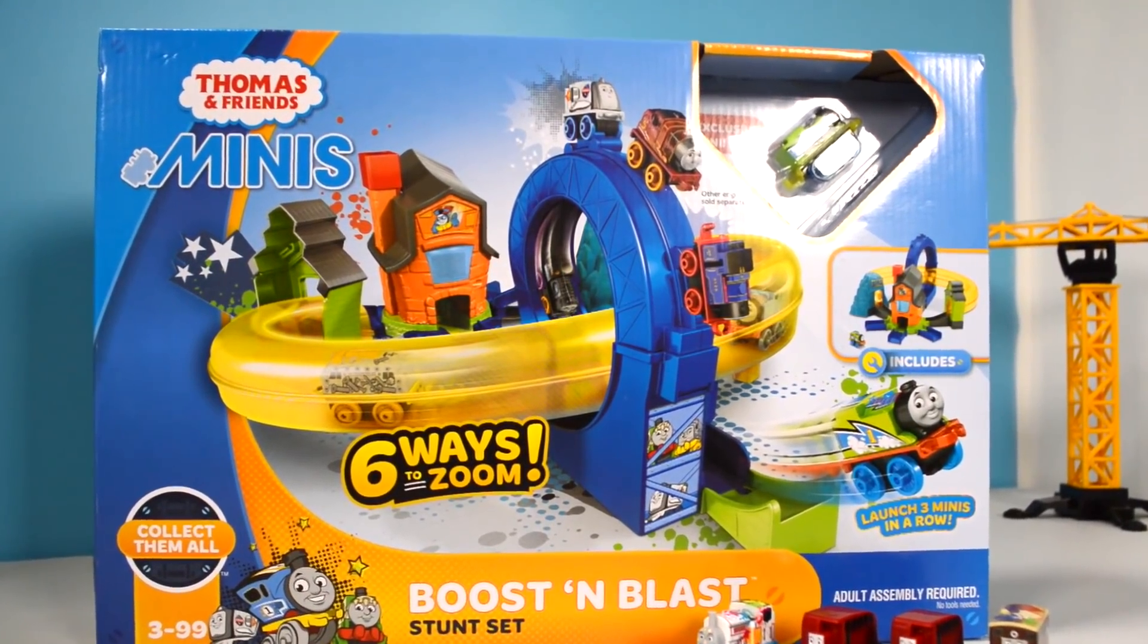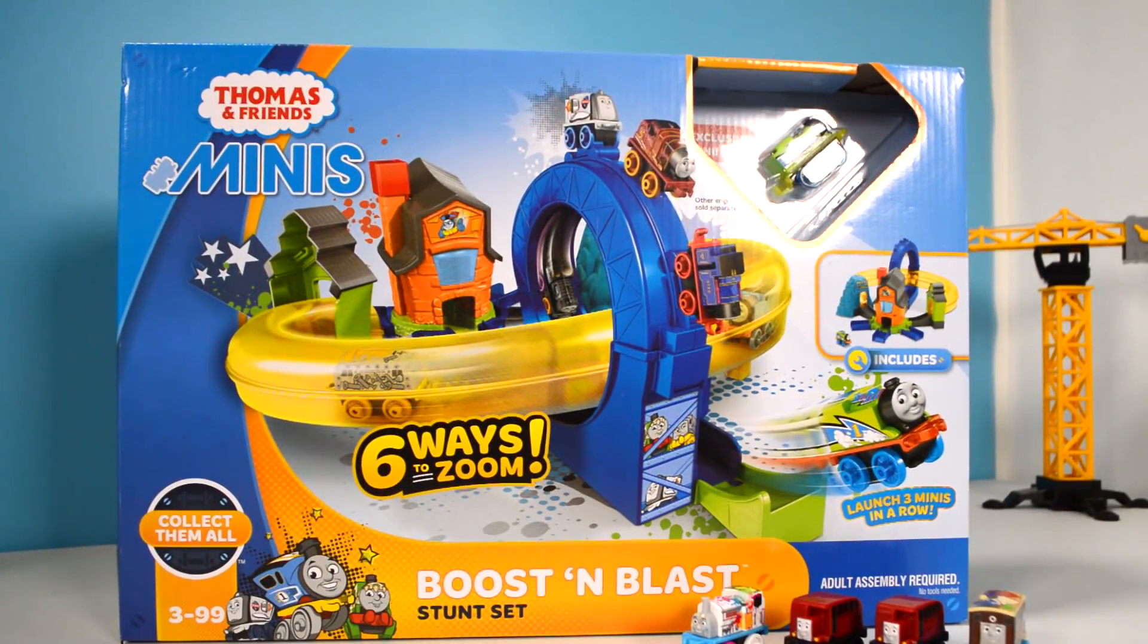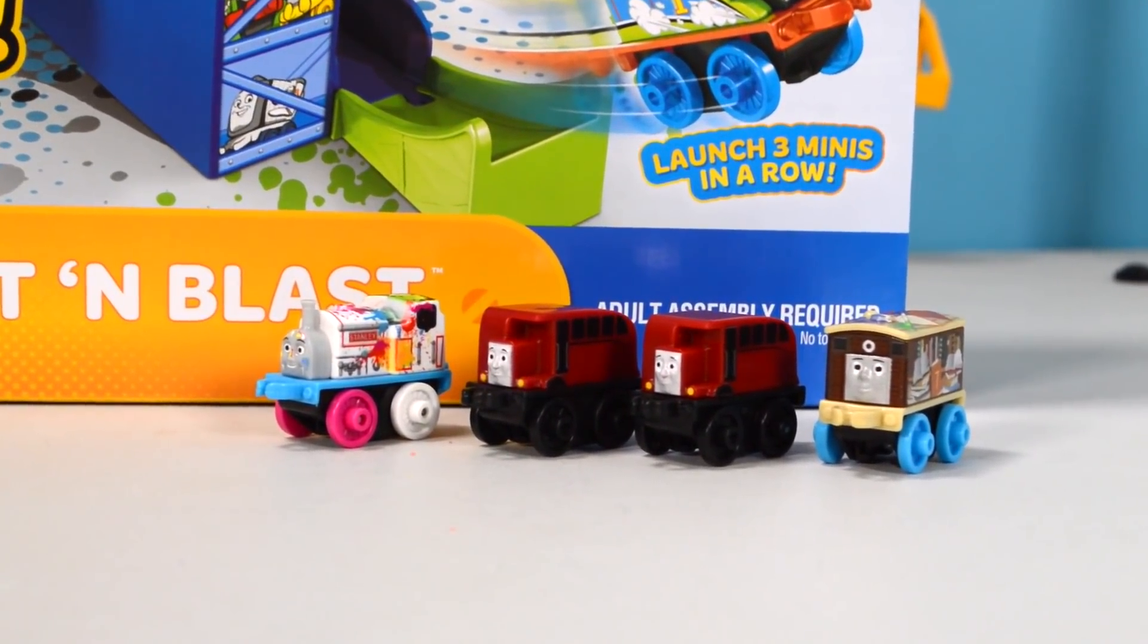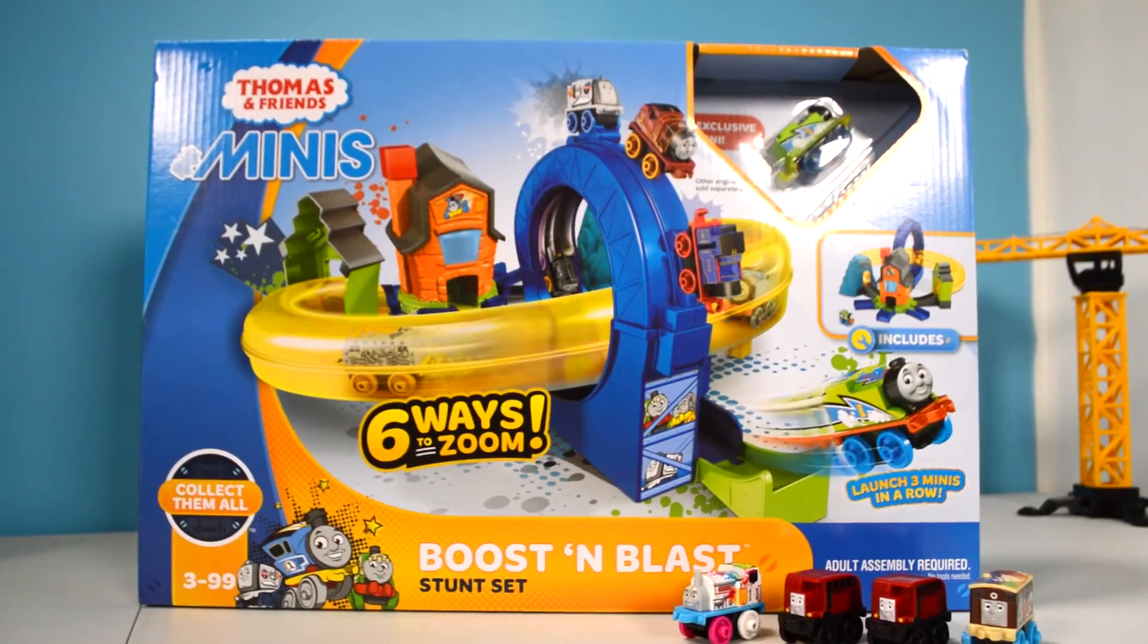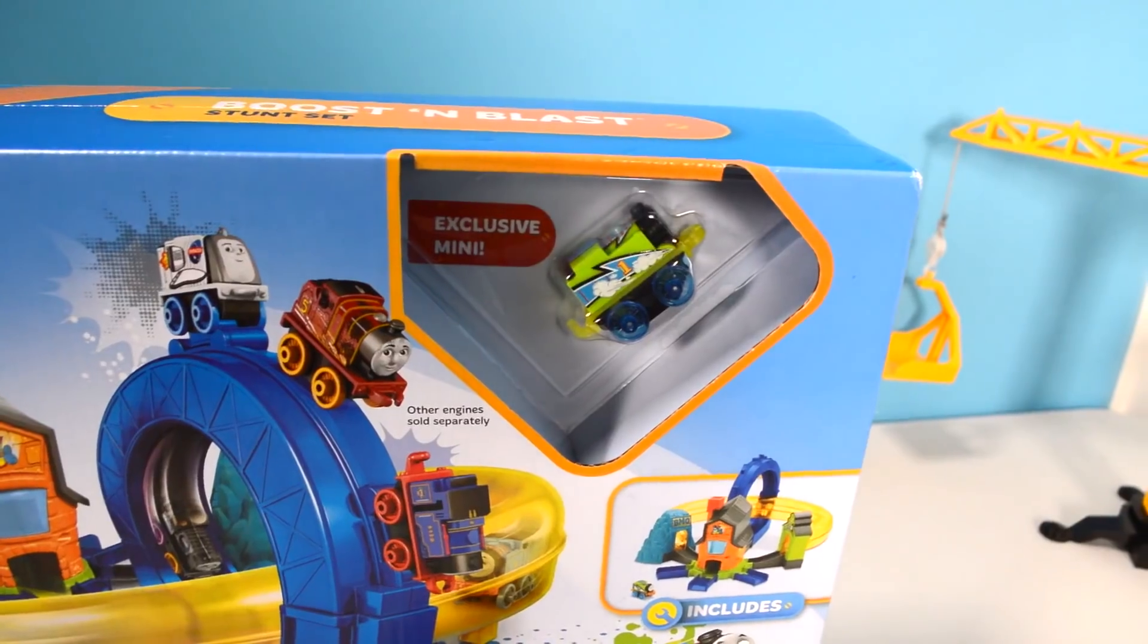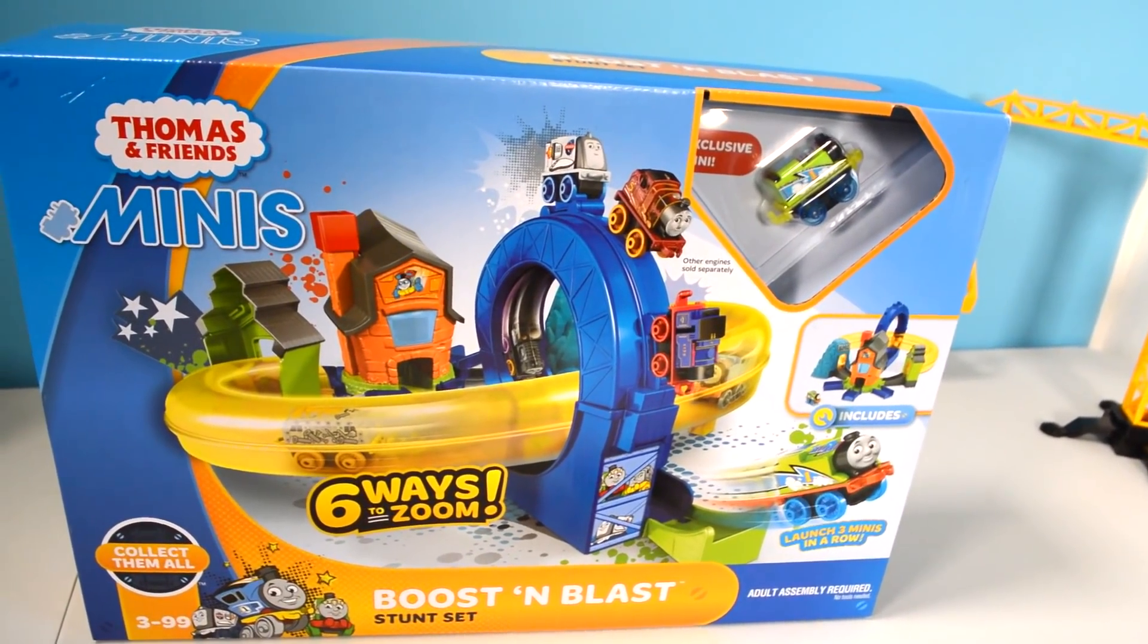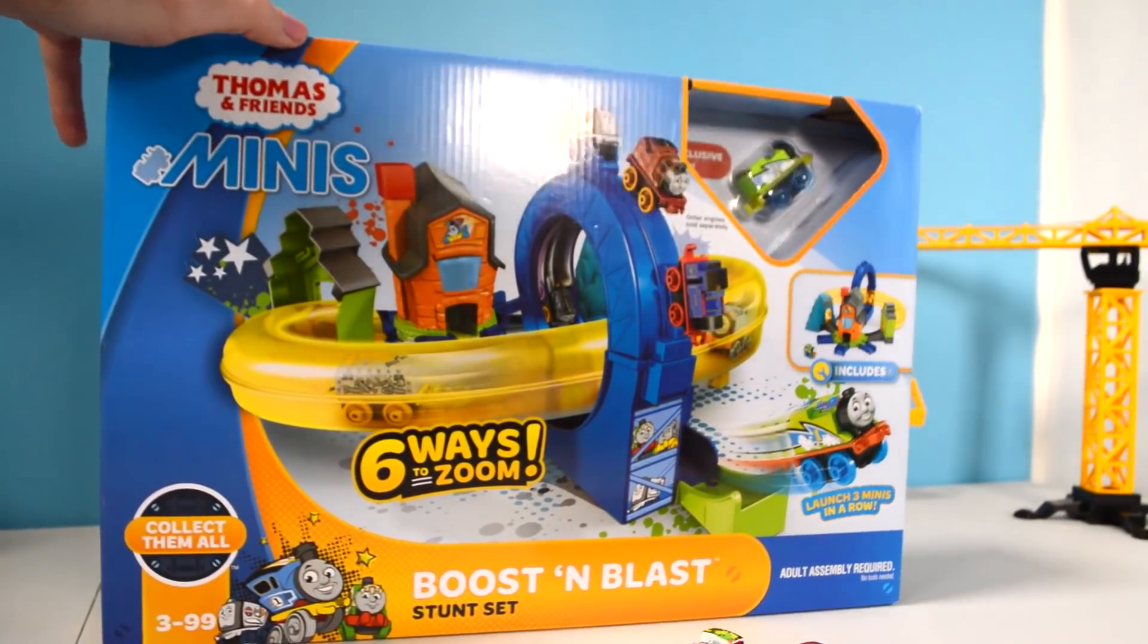Today we're going to open the Boost and Blast Stunt Set. It's Thomas and Friends Minis. And it includes an exclusive mini. Yesterday we opened these fun blind bags. And here's what we got. Hope you get to check out this video. Here's the exclusive mini that's included. It's a special Thomas. And take a look at this fun toy. It actually zooms six ways. It does require adult assembly. And look at this. You can launch three minis in a row. You get a house where you can launch your minis from. It's the zippiest, zoomiest mini stunt set yet. It's got a hoopty loop.